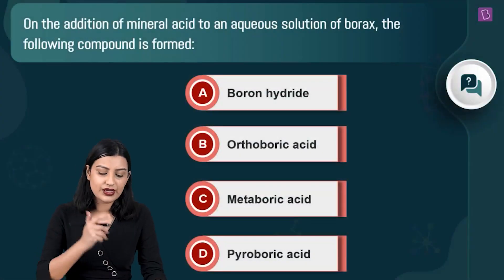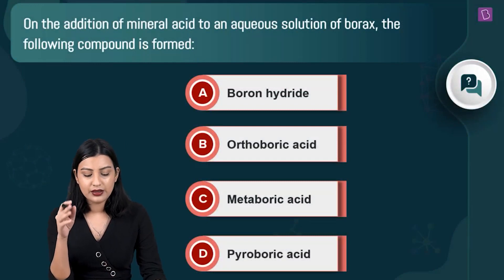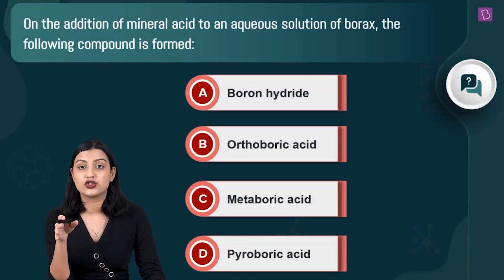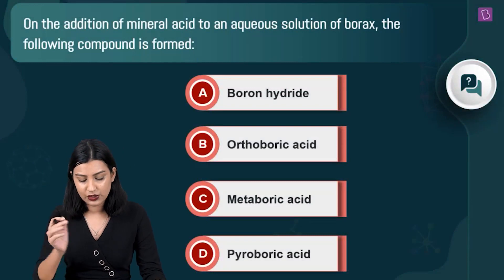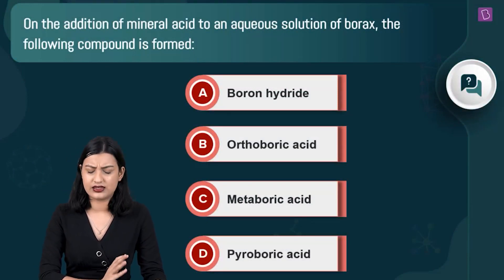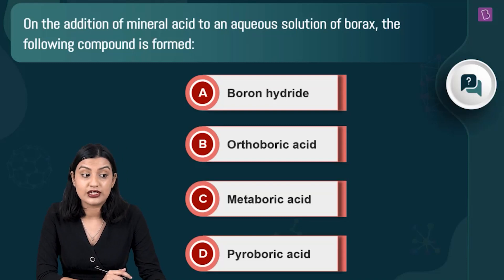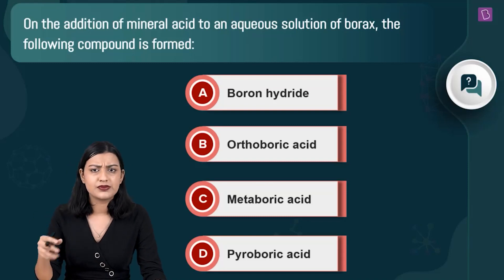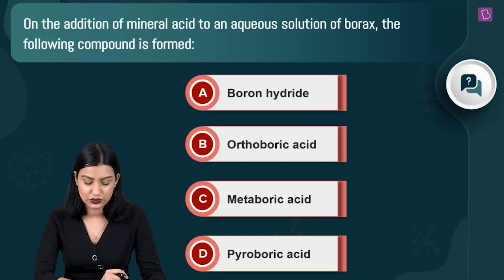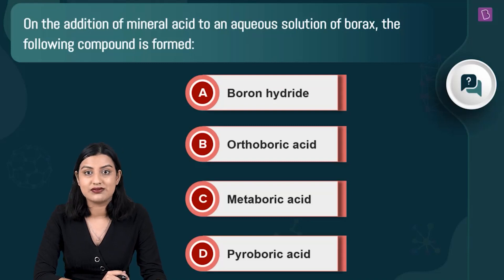In this question, they're asking what happens when you add a mineral acid to an aqueous solution of borax. The options are: boron hydride (BH₃), orthoboric acid (H₃BO₃), metaboric acid (HBO₂)ₙ, and pyroboric acid (H₂B₄O₇). We need to figure out which compound is formed.